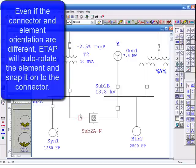Even if the connector and element orientation are different, ETAP will auto-rotate the element and snap it onto the connector.